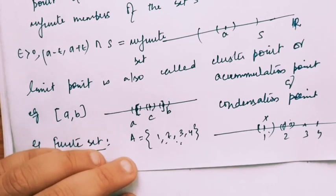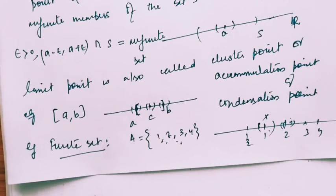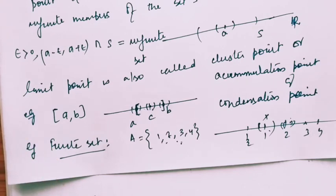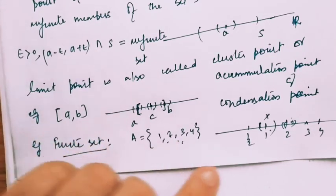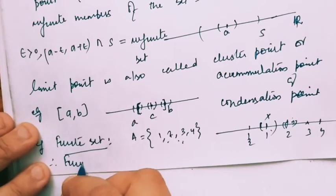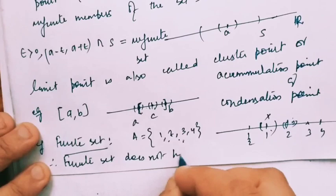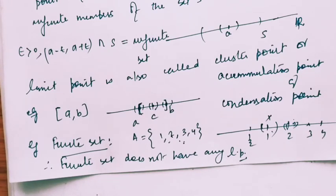Now we talk about a non-member. For example, take 1/2. By selecting a suitable epsilon, the neighborhood of 1/2 will not contain any element of the set. Therefore, it is impossible for it to contain infinite members, so 1/2 is also not a limit point. Therefore, a finite set does not have any limit points — neither from within the set nor from outside the set.